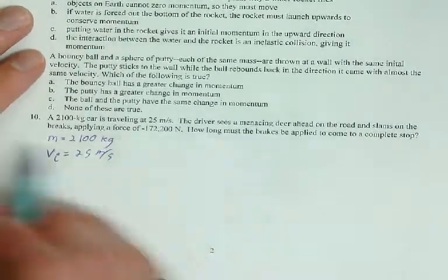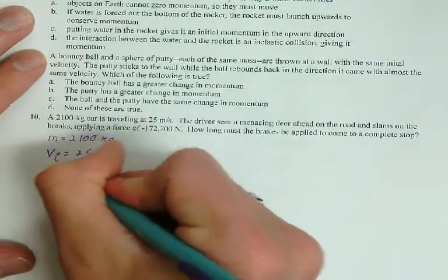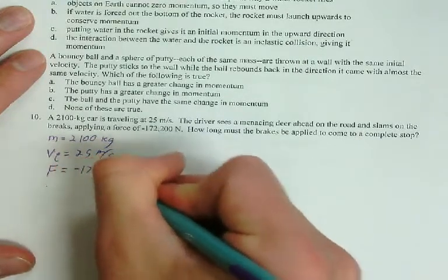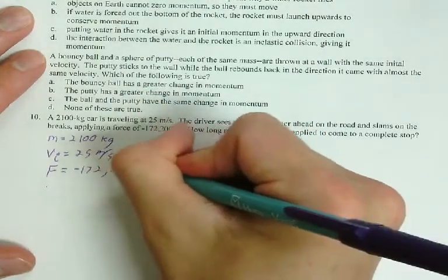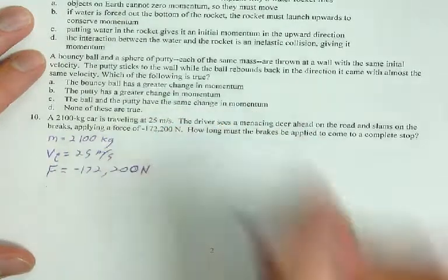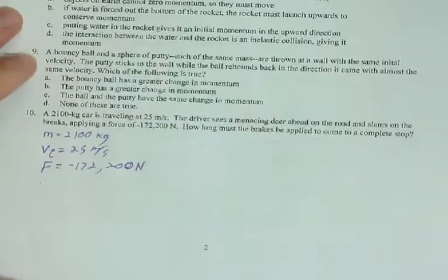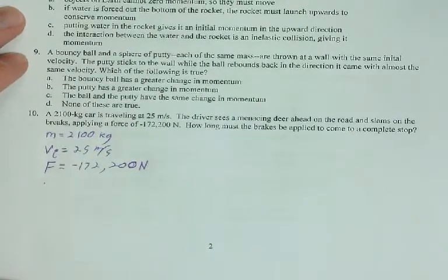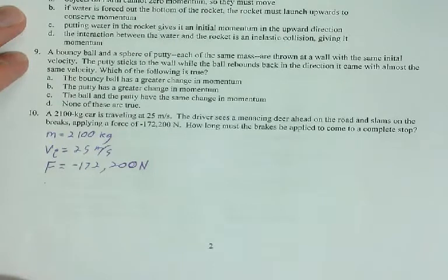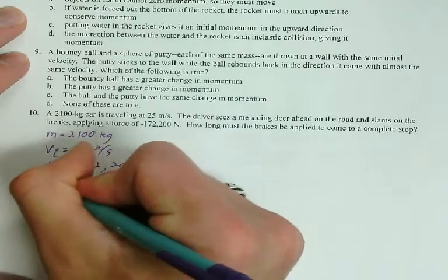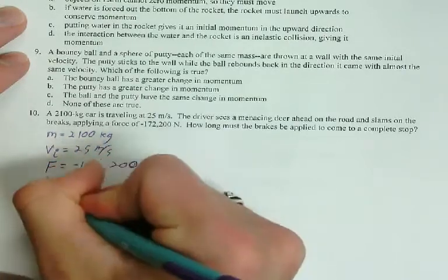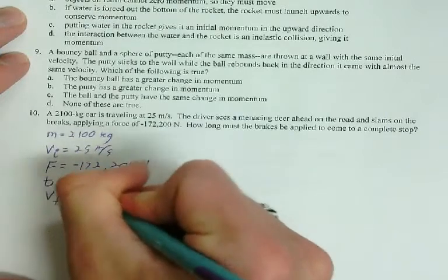Okay, driver sees a deer, slams on the brakes, applies a force, negative 172,200. How long does it take the brakes to be applied to come to a stop? So, how long does it take? What's the time interval to come to a stop? So, velocity at the end to be zero.